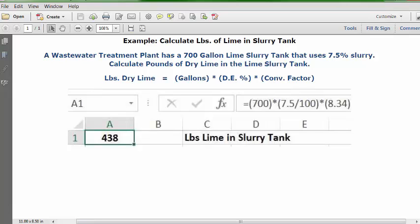Put your cursor in C1 and type in the description "Lbs Lime in Slurry Tank." Put your cursor in A1 and format it as whole numbers with zero decimals, and set that as bold and centered.